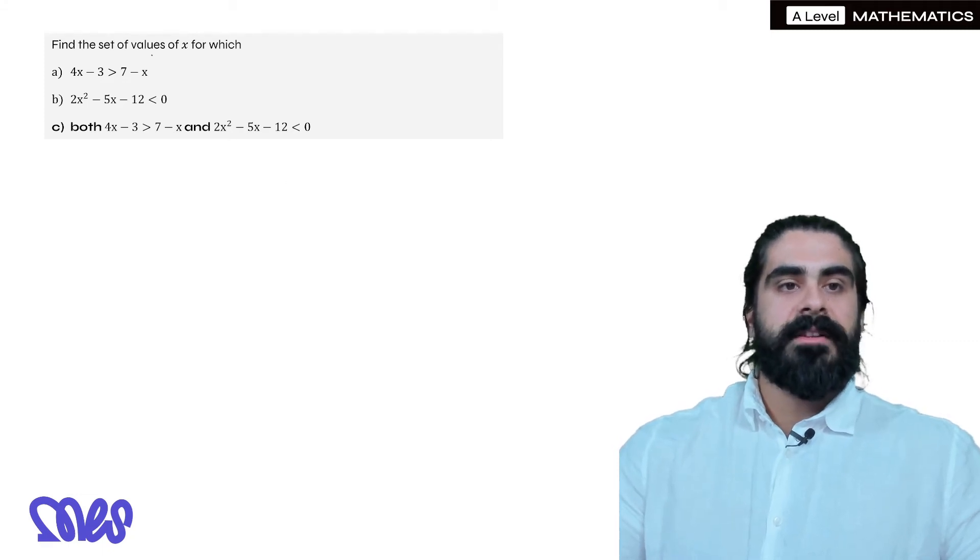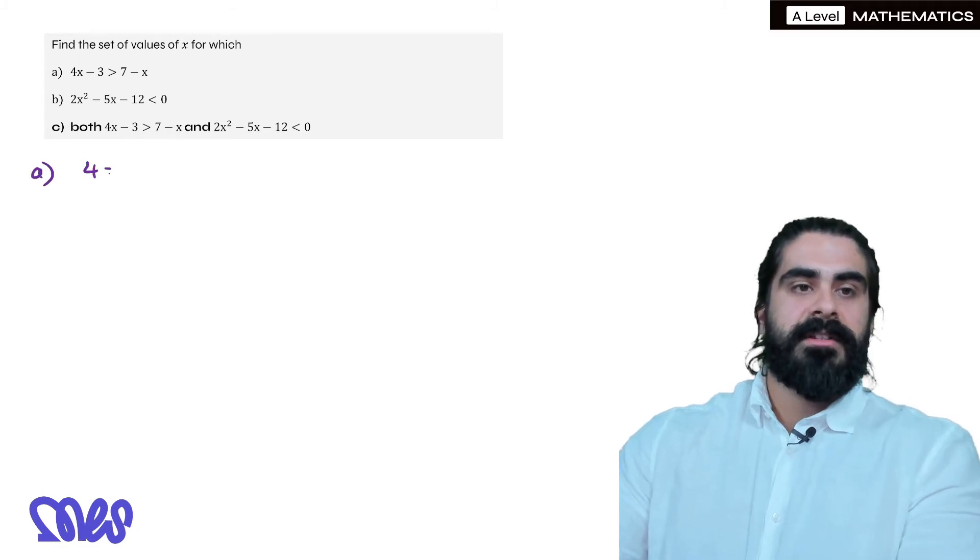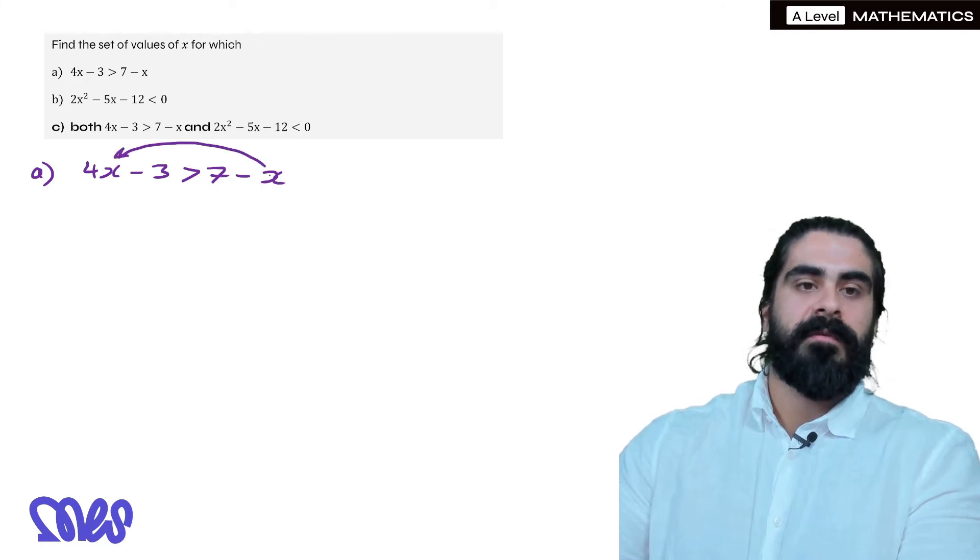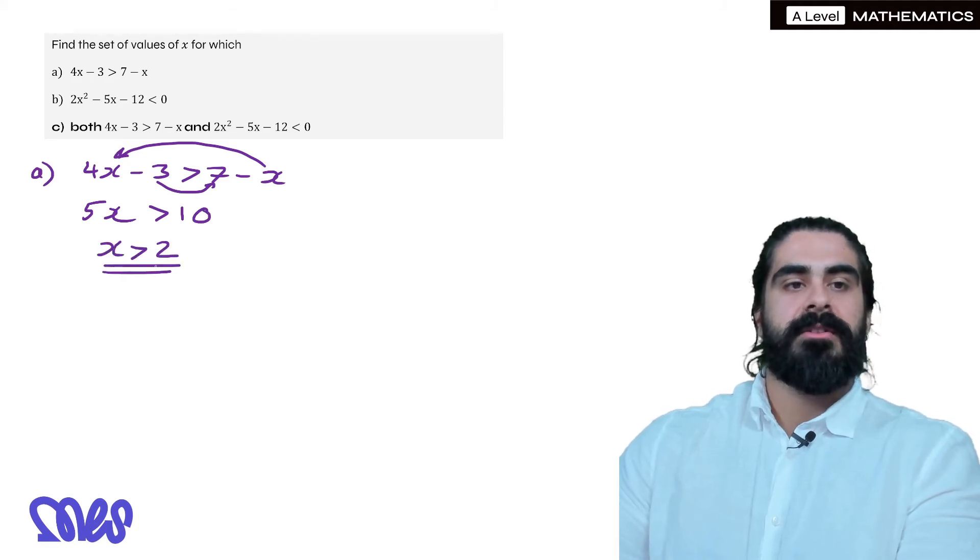So an exam type question, find the set of values of x for which 4x minus 3 is greater than 7 minus x. So the first thing we're going to do there is just rearrange like any normal question. The negative x can come over to this side, 4x plus x is 5x, then the minus 3 can go onto that side, so become plus 3, 7 plus 3 is 10, then divide by 5 on both sides, x is bigger than 2.